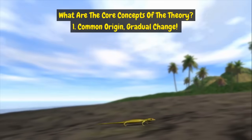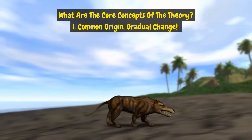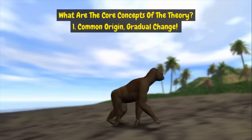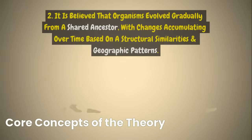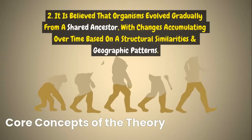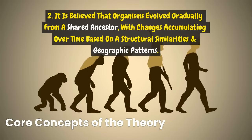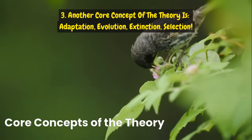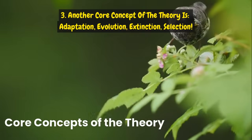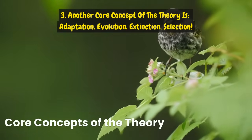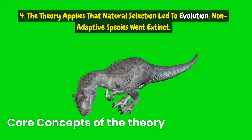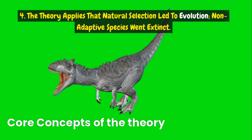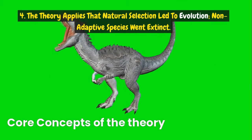What are the core concepts of the theory? First, common origin and gradual change. It is believed that organisms evolved gradually from a shared ancestor, with changes accumulating over time based on structural similarities and geographic patterns. Another core concept is adaptation, evolution, extinction, and selection. The theory posits that natural selection led to evolution, and non-adaptive species went extinct.